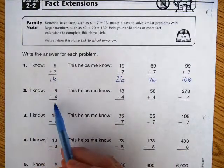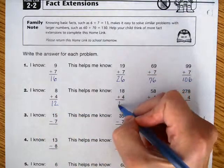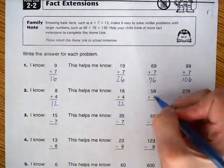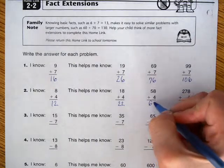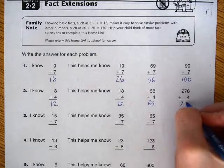I know that 8 plus 4 equals 12, that 18 plus 4 equals 22, 58 plus 4 equals 62, 278 plus 4 equals 282.